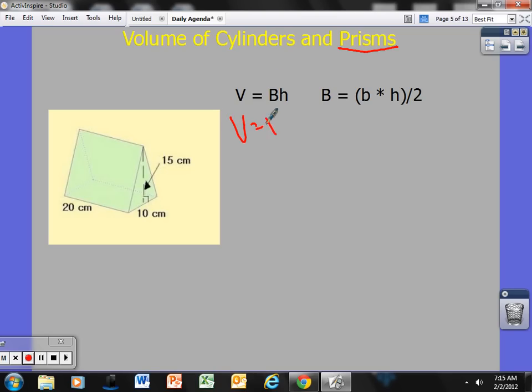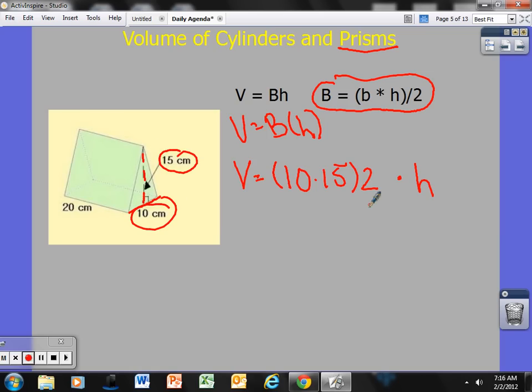If I take a look at this, we have volume equals area of the base times the height. Now this base is a triangle, so I'm going to use this formula right here: base times height divided by two. You can also do one-half times base times height. But remember, when you're multiplying something by a half, all you're really doing is dividing it by two. If I plug in some numbers here, volume equals the area of the base. The area of the base is 10 times 15 divided by 2 times the height of this.